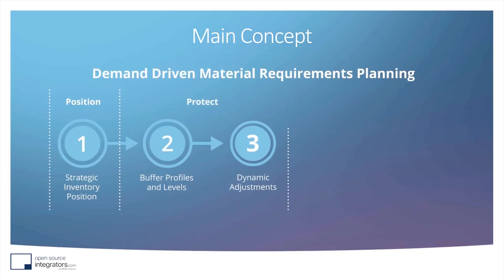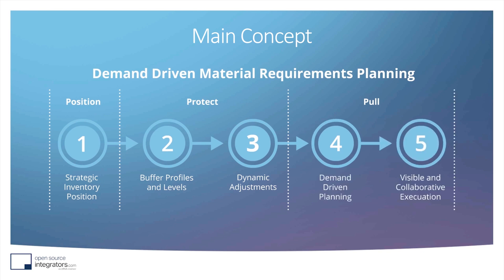The first step of DDMRP is positioning — deciding where to place buffers in the supply network or supply chain. The second step is computing buffer profiles and defining the three zones: the red, yellow, and green zones. The third step is setting buffer adjustments so that buffers are dynamically updated over time. These three steps form the configuration phase. In terms of operations, the fourth step is having the procurement team manage the buffer and drive demand, and the fifth step is using color-coded signals so the entire organization can execute planning through visible KPIs and collaboration.